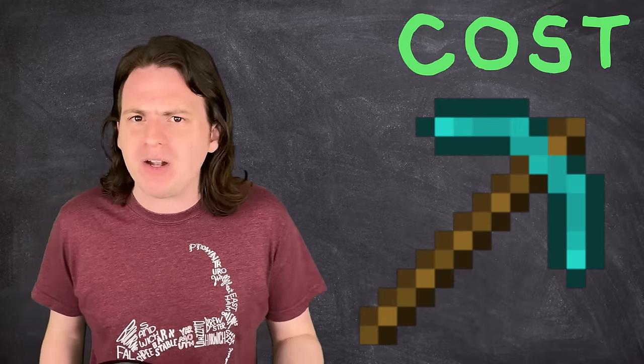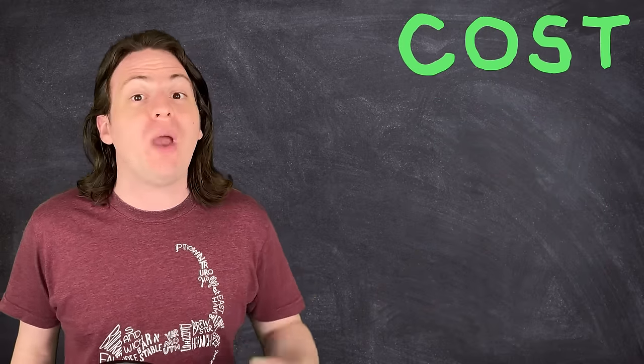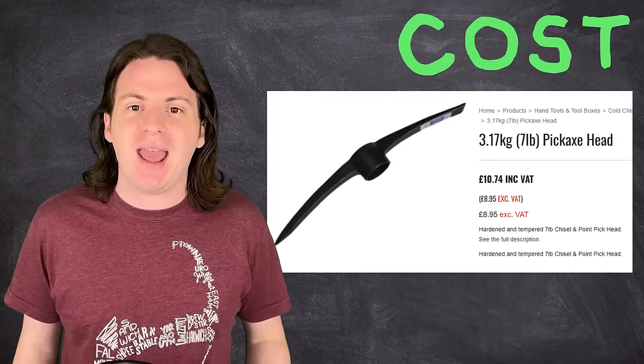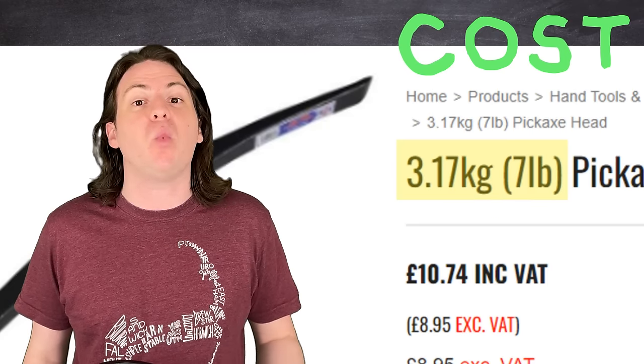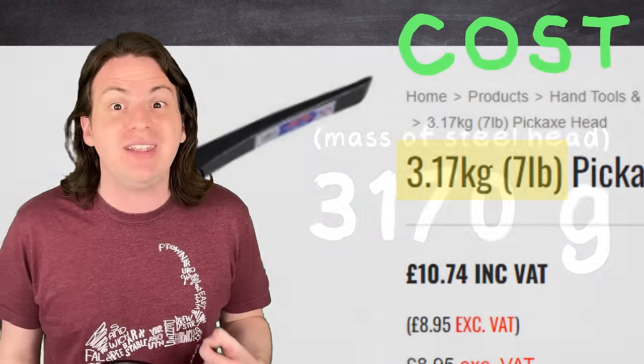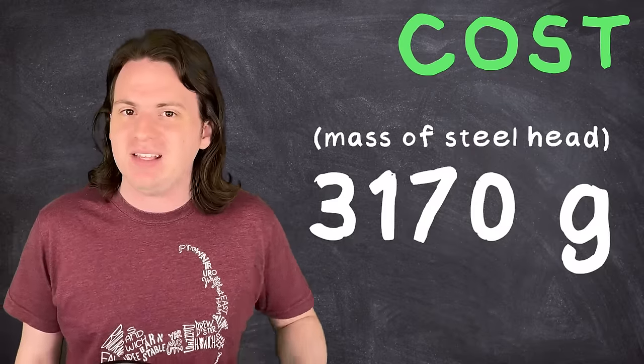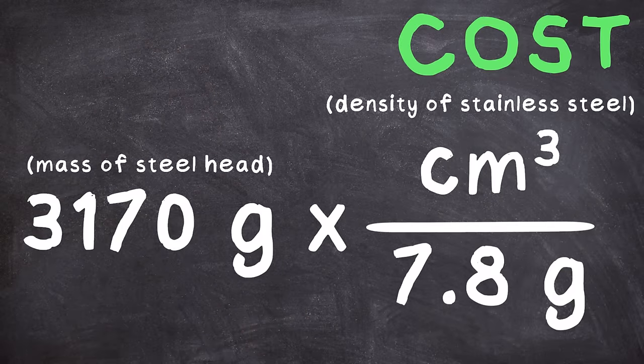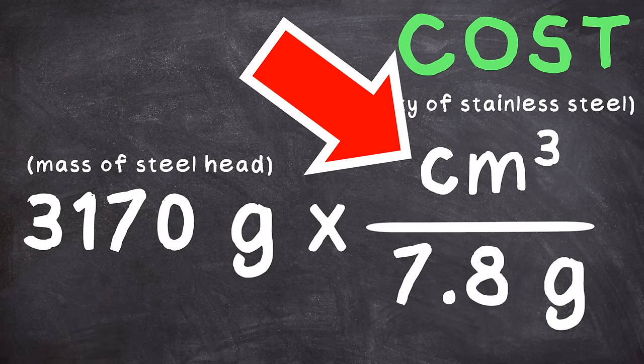And you'd need a lot of diamond to make a full pickaxe head. Exactly how much diamond? Well, let's do some quick math. A regular steel pickaxe head has a mass of 3.17 kilograms. The density of stainless steel is 7.8 grams per centimeters cubed. Multiplying those together will give us the volume of material required to make a pickaxe head.